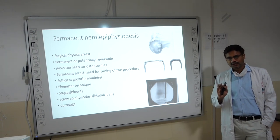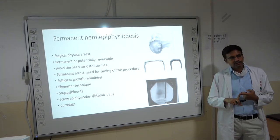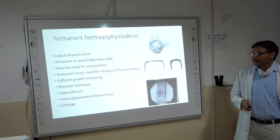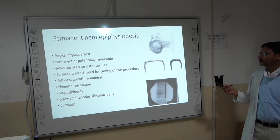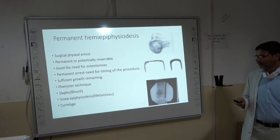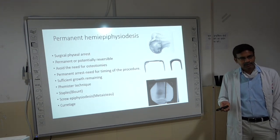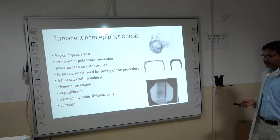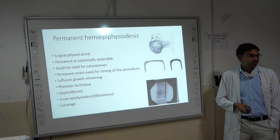Normal physiological physis closure is 14 years in girls and 16 years in boys. So you should not attempt this in a boy older than 14 years or a girl older than 12 years. Techniques for permanent hemi-epiphysiodesis include: the classical Phemister technique (reversing a piece of metaphysis-epiphysis-physis block), Blount's staples (named after Blount for tibia vara), the Metazow screw technique, and curettage of the physis.